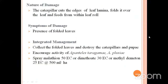Coming to the nature of damage: the caterpillars, which are about 30 to 35 mm in length, feed on the leaves, cut the edges of the leaf lamina, fold it over, and feed from within the leaf roll. This leads to the presence of folded leaves and defoliation. Coming to the management: handpicking and destruction of grown-up larvae and pupae. The important biocontrol agent is that the larvae are parasitized by Apanteles cruciara and Apanteles taragame. Chemical management involves spraying malathion 50 EC, or dimethoate 30 EC, or methyl demeton 25 EC at the rate of 500 ml per hectare.